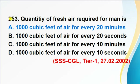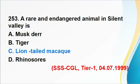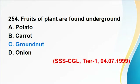Question 253: A rare and endangered animal in Silent Valley is the lion-tailed macaque. Answer C is correct. The lion-tailed macaque is one of the most endangered primates of India, confined to the main Western Ghats. Silent Valley is located in the high mountains of the Western Ghats, making it home to this endangered animal.